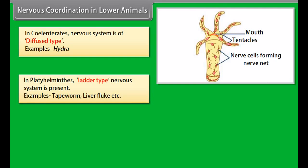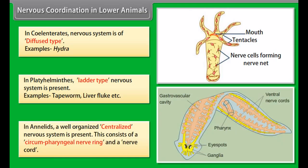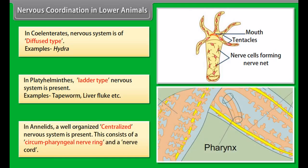In coelenterates, the nervous system is of diffused type — example: Hydra. In platyhelminthes, a ladder-type nervous system is present — examples: tapeworm, liver fluke, etc. In annelids, a well-organized centralized nervous system is present, consisting of a circumpharyngeal nerve ring and a nerve cord. In arthropoda, a centralized nervous system like annelids is present, but their nerve ring is circumesophageal.